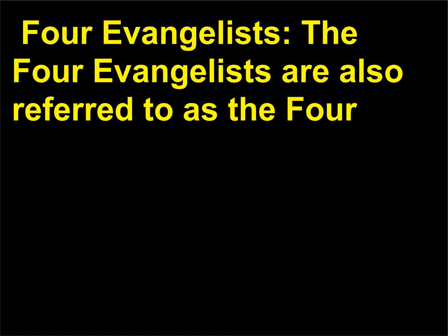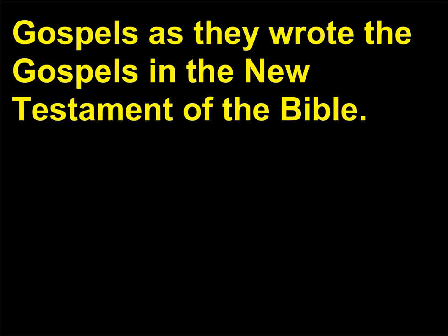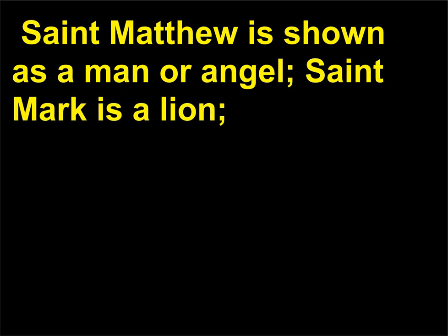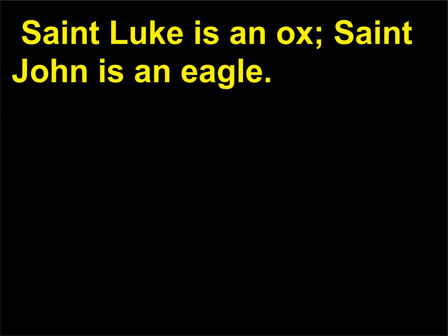The four evangelists are also referred to as the four Gospels, as they wrote the Gospels in the New Testament of the Bible. Each of them is often represented with a particular symbol or attribute: Saint Matthew is shown as a man or angel, Saint Mark is a lion, Saint Luke is an ox, and Saint John is an eagle.